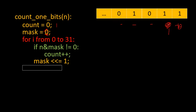So mask starts as one with all left bits zero, evaluating to one — not equal to zero, so count becomes one. Then we left shift the mask. We see one at that bit position, so one AND one evaluates to something not equal to zero — count becomes two. Shift again — zero AND one evaluates to zero, so count doesn't increase. Shift again — one AND one is not zero, count becomes three. After all left bits are zero, the condition won't match and it stops.